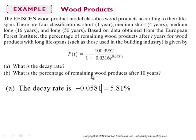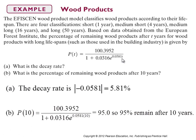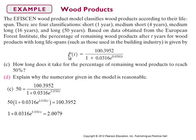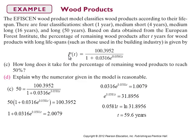Part B: what is the percentage of remaining wood products after 10 years? Capital P here is percent. Replace t by 10 and evaluate the function — that works out to be 95%, meaning 95% of the wood products remain after 10 years. Part C: how long does it take for the percentage of remaining wood products to reach 50%? Set P = 50 and solve for t. Working through the algebra gives approximately 59.6 years.